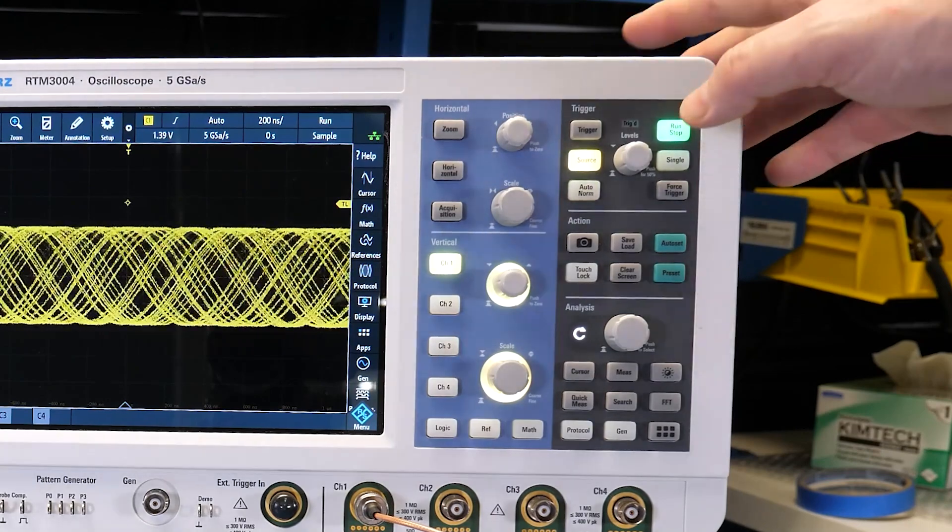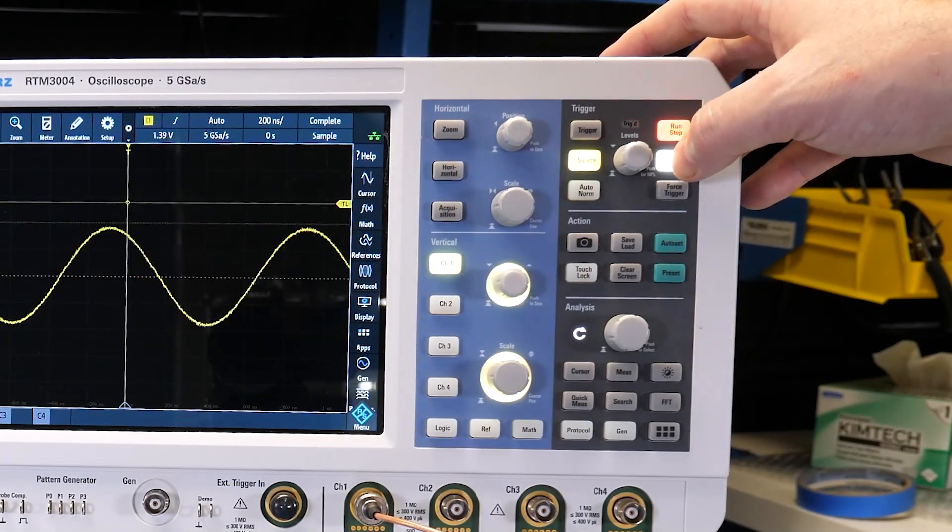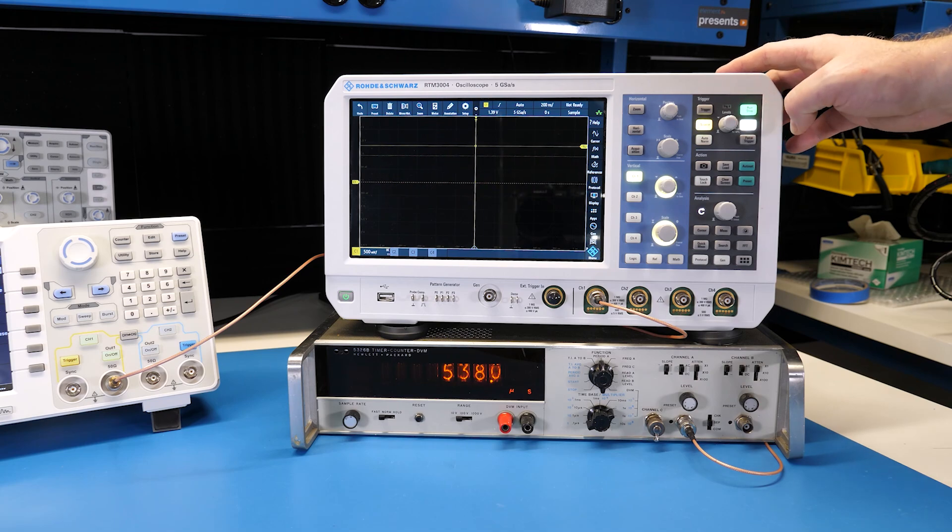By the way, some scopes have something called a digital trigger. The trigger system in these oscilloscopes monitor the sample data to detect events digitally. But either analog or digital works about the same for the purposes of this video in terms of using the triggers. Digital scopes have auto, normal, and single. Single is the most obvious of the three. The oscilloscope will capture a single acquisition each time you run the scope or press the single button.